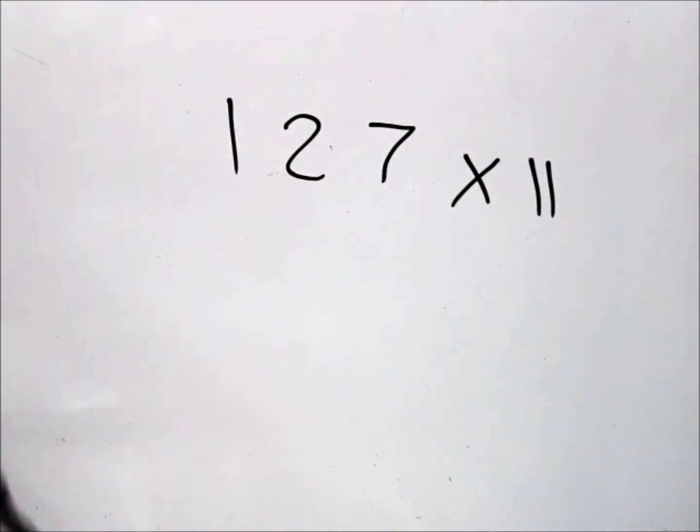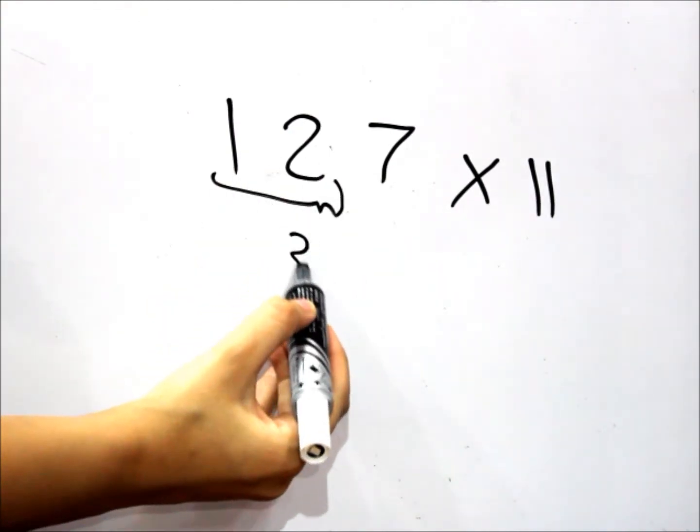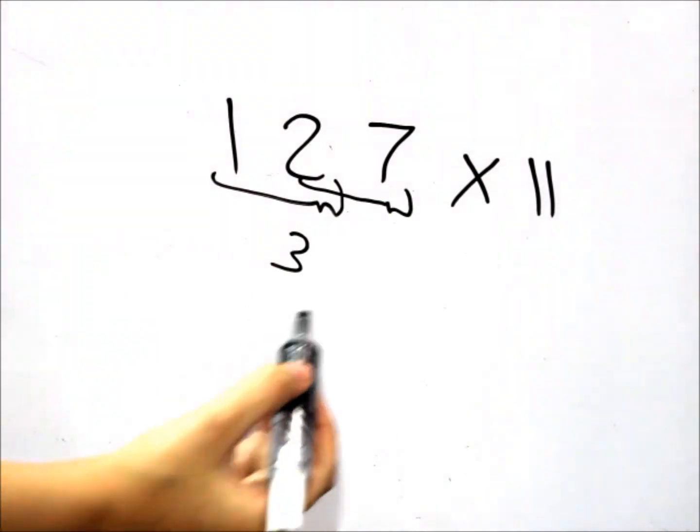So what we're going to do in such a case is take the 2 and the 1 separately and add them up, and they are 3. Take the 7 and the 2 separately and add them up, and they are 9.